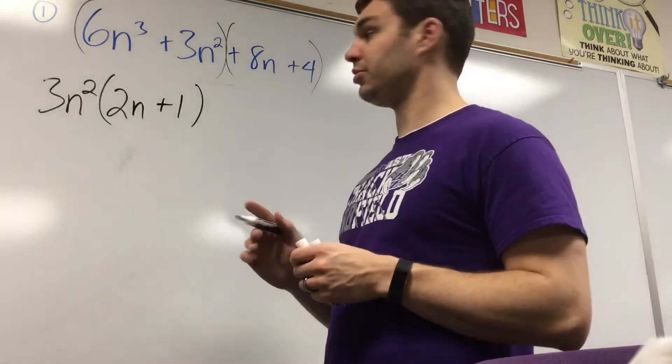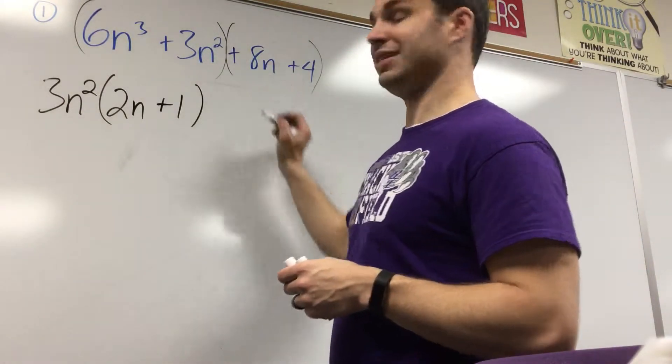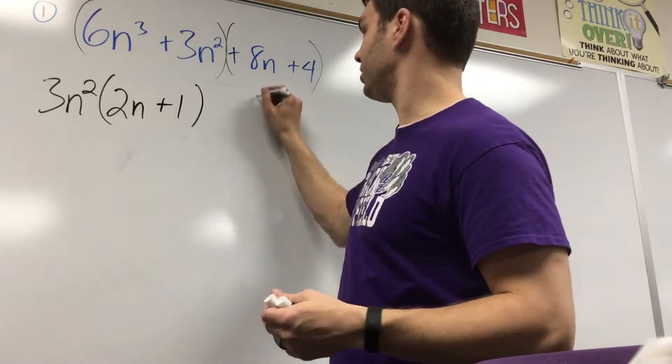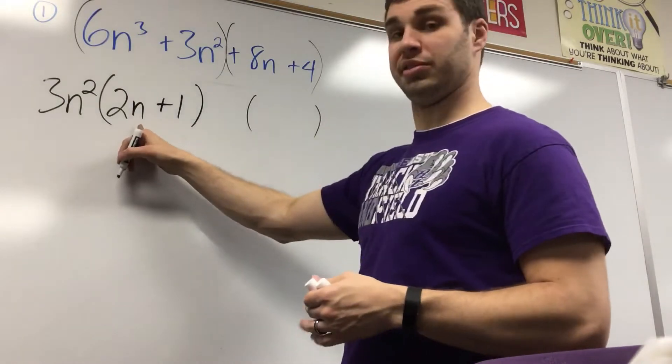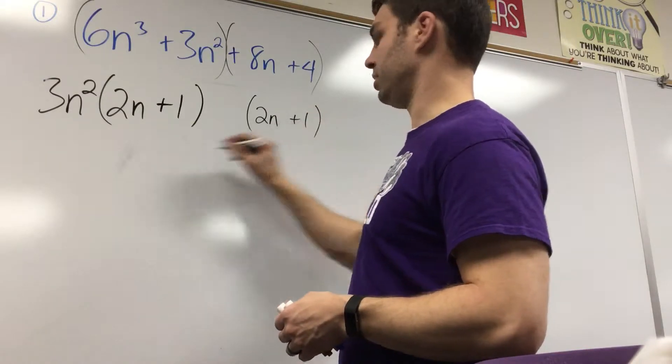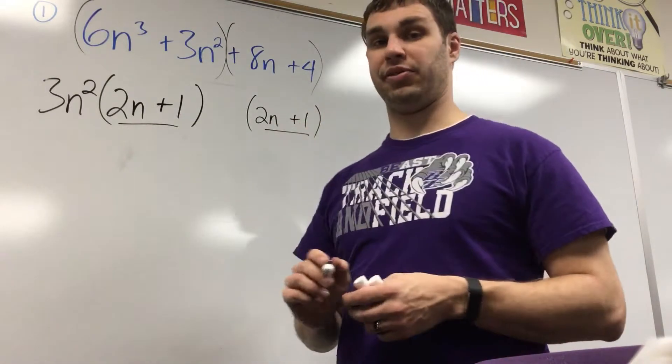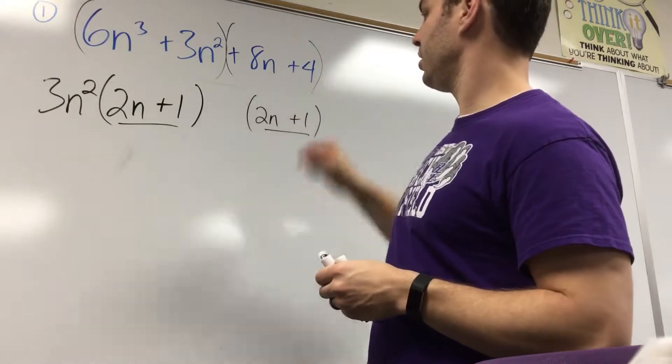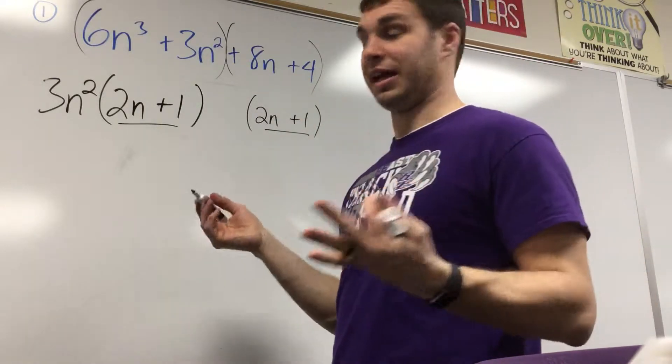Then what you want to do is you take out something from the second one so that the other part is the exact same as your parentheses before. So I need this to be 2n plus 1 because those will match my first parentheses. And if I look at this, I can take out a 4 and I will get that.